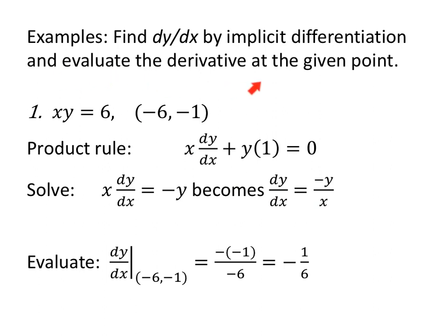Now evaluate at the given point. Notice that with implicit differentiation I can substitute both x and y values. dy/dx at (−6, −1): negative of (−1) over (−6) gives three negatives, so the result is negative 1/6. The slope of the tangent line to the graph of xy equals 6 at the point (−6, −1) is negative 1/6.